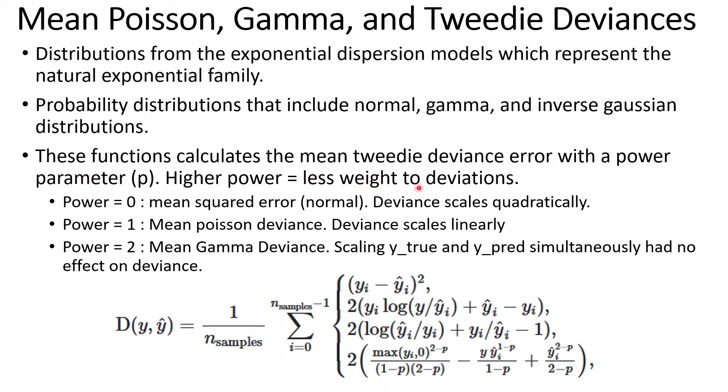Higher power equals less weight to deviations. So if the power equals 0, then it's mean squared error, which is like the normal deviance, and it means that the deviance scales quadratically. When power equals 1, this is the mean Poisson deviance, and this means that the deviance scales linearly.